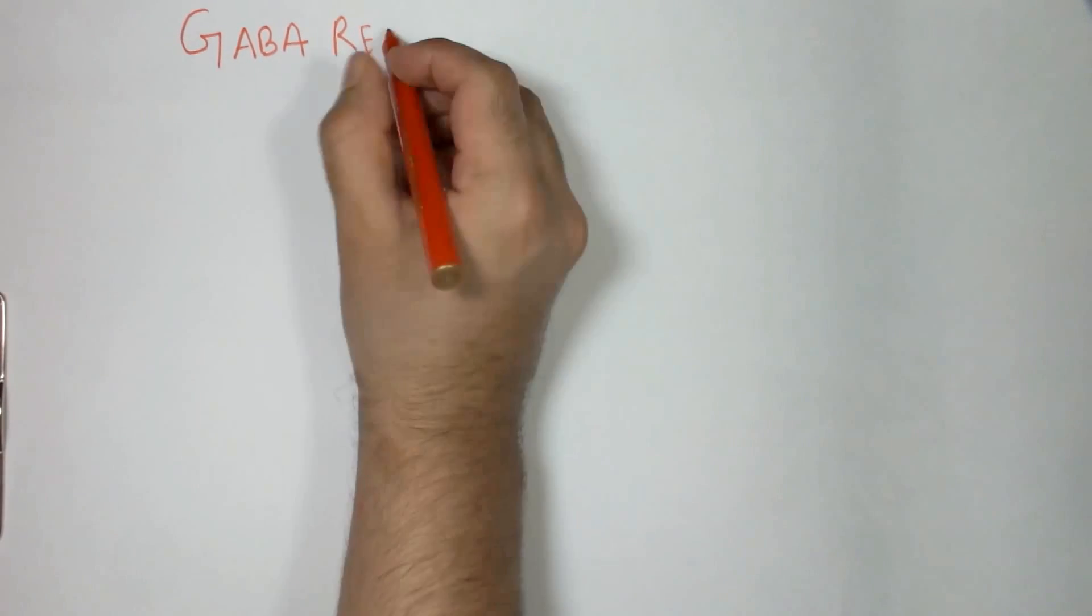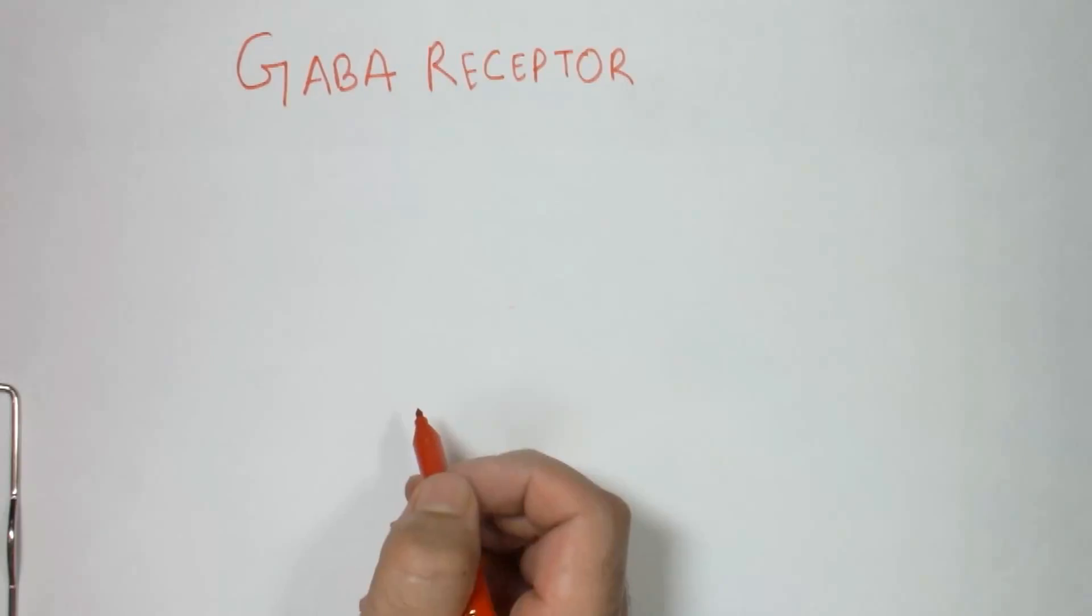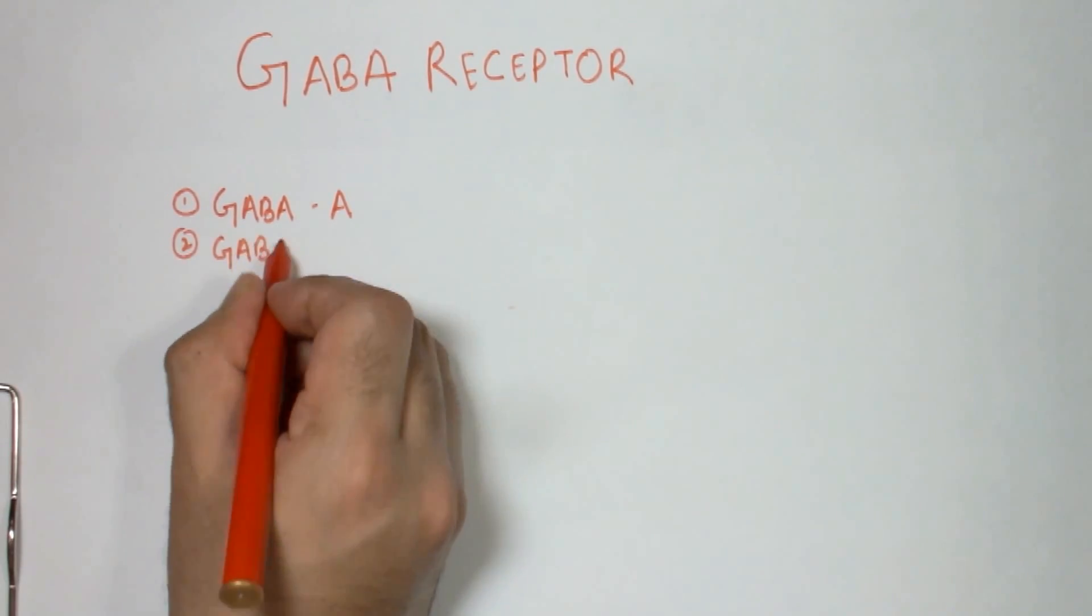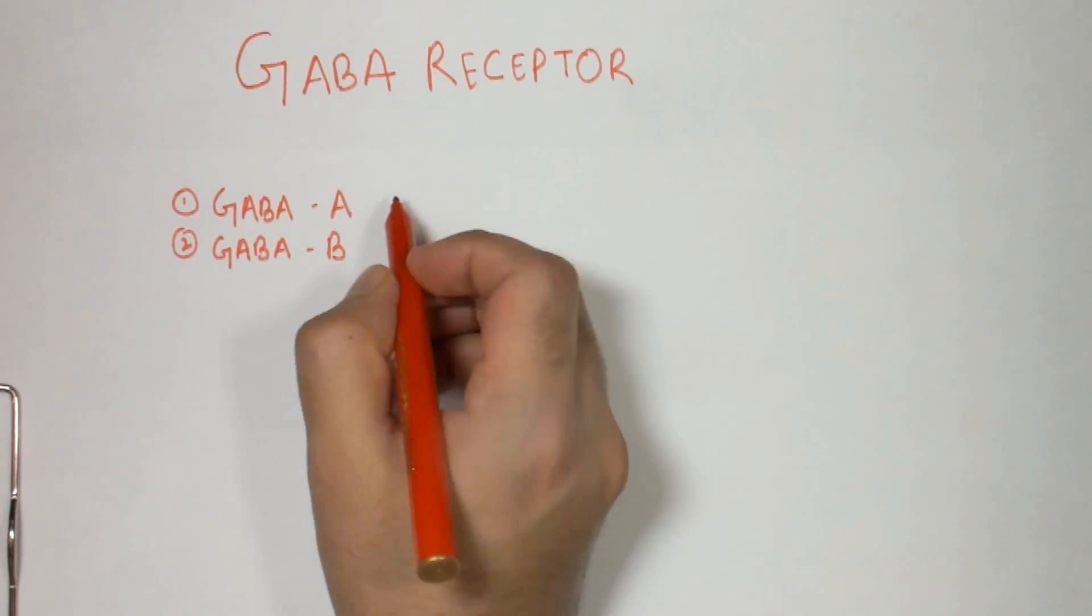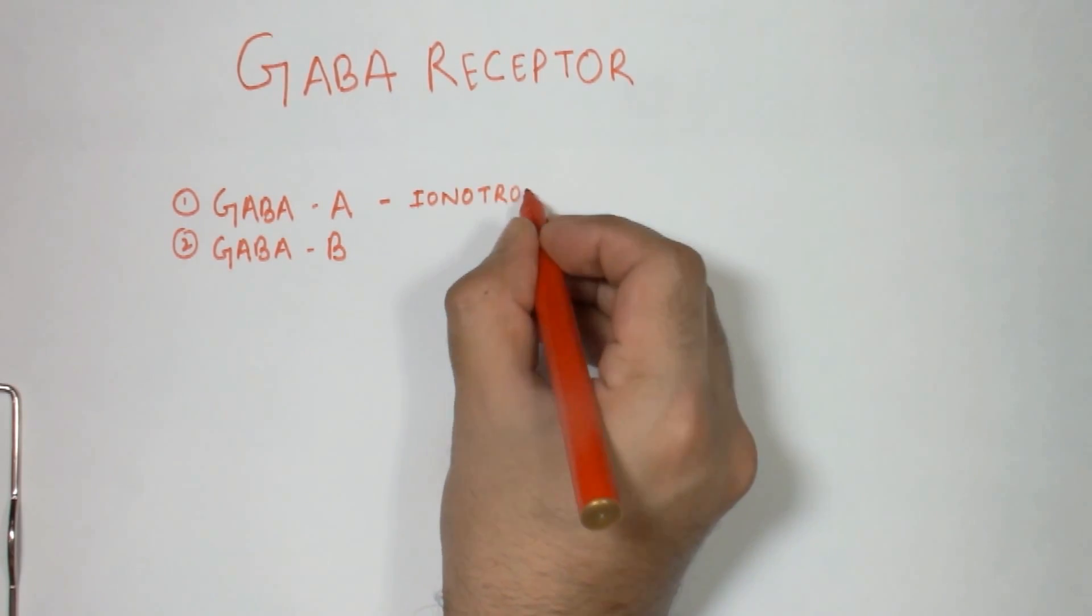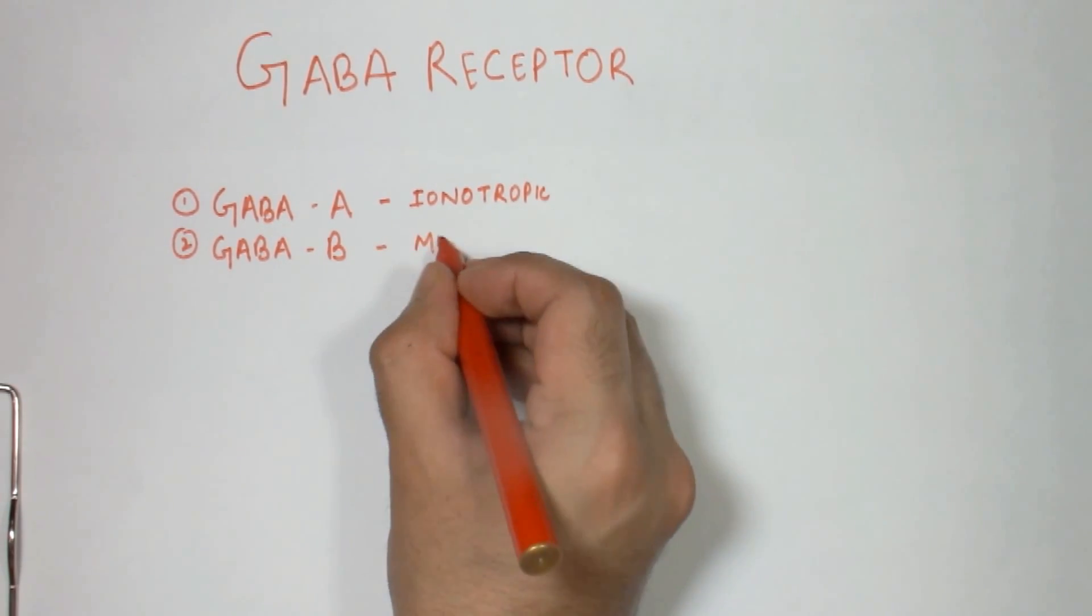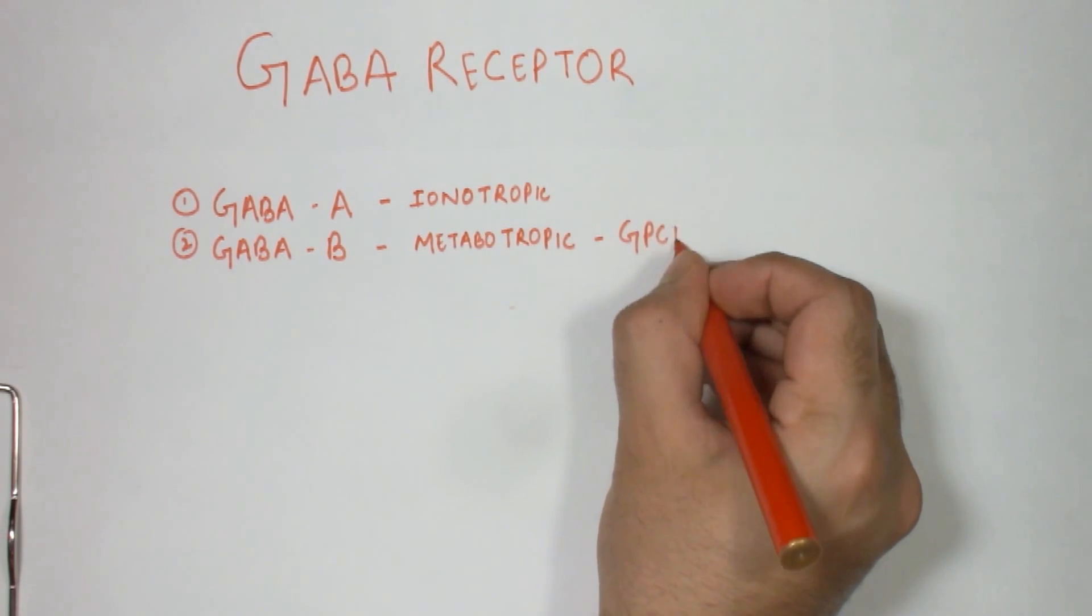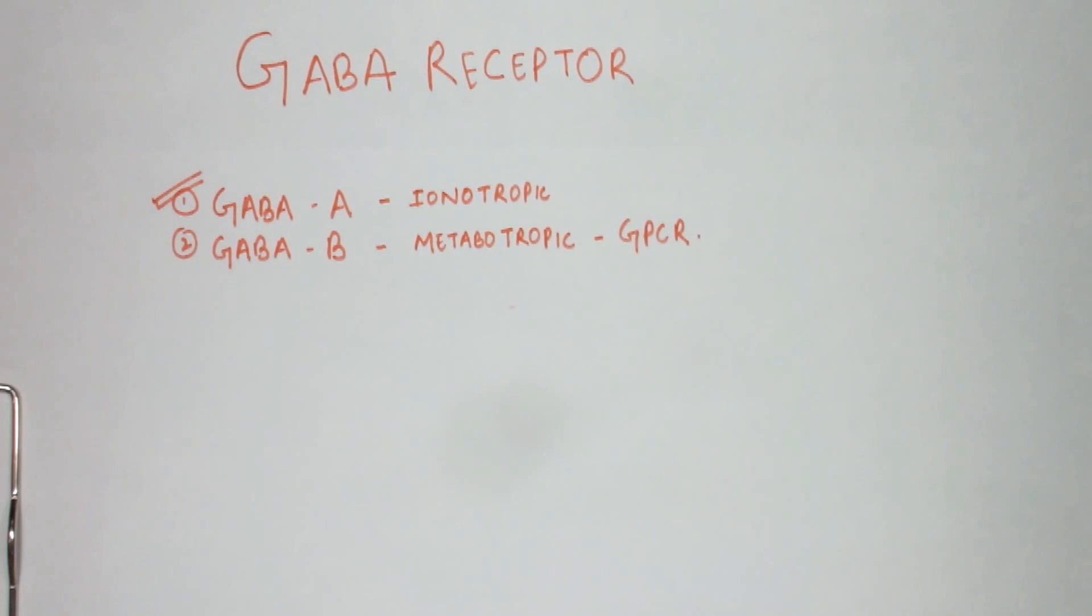Alright, now in this video we will study the GABA receptor. The GABA receptor is of two types: the first is the GABA-A and the GABA-B receptor. The GABA-A is a type of ionotropic receptor and GABA-B is a type of metabotropic or G protein coupled receptor, but in this video we will only focus on the GABA-A receptor.